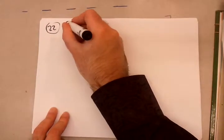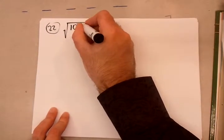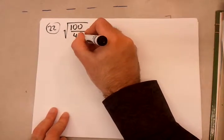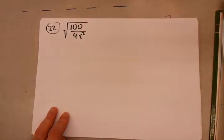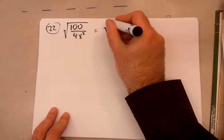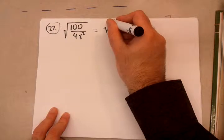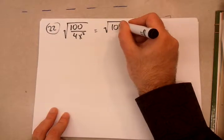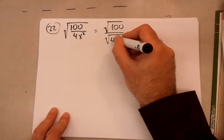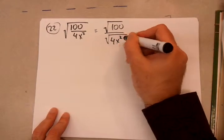You have this fraction underneath the root. You can't have any fractions underneath the root, so we have to break them up. The quotient property of radicals allows us to do this. It allows us to break this down into two separate roots, one in the numerator, one in the denominator.